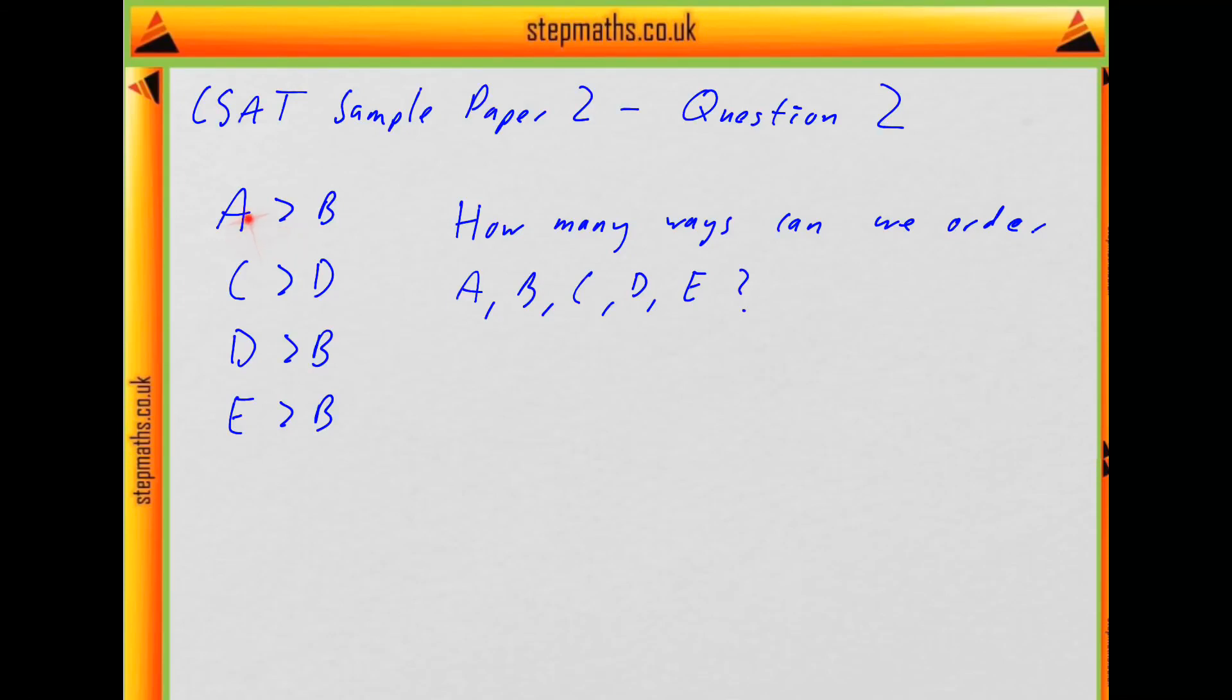So what's the first thing we see here? Well, a lot of these things are saying something is bigger than B. And in fact if we look at this second one, it isn't saying that, this is saying C is bigger than D, and it also gives us C is bigger than B, because C is bigger than D, D is bigger than B. So we know B has to be the smallest.